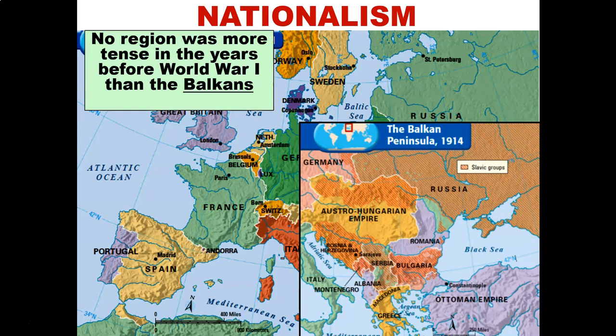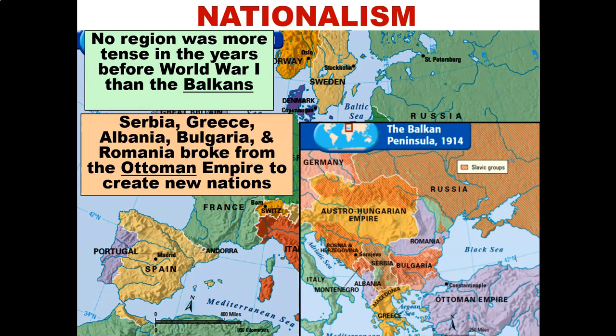Because of everything that was already going on in Europe, no region was more tense in the years before World War One than the Balkans. This is the Balkan area shown to your right, and that area was very tense as nations were trying to gain control and dominate what happened there. Serbia, Greece, Albania, Bulgaria, and Romania broke from the Ottoman Empire to create new nations.